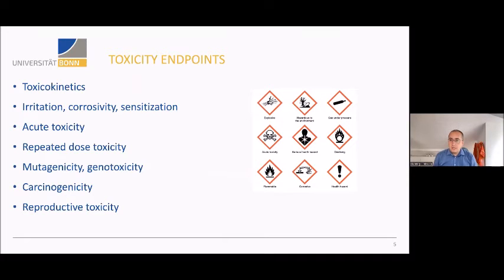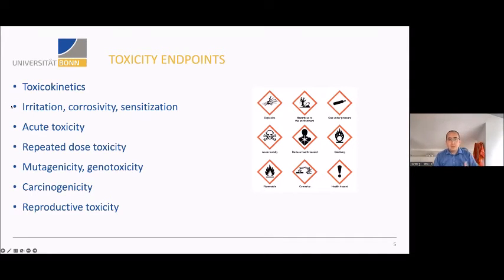Toxicity assessment includes various endpoints. Toxicokinetics deals with what happens to a substance in the body — its distribution, metabolism, and so on. We also have local toxicity endpoints such as irritation, corrosivity, and sensitization, especially skin sensitization. A major distinction is between acute toxicity — where a substance is applied once or over one day — and chronic or repeated dose toxicity, where exposure extends over weeks, months, or even years and decades. This assessment leads to certain labeling or hazard identification.